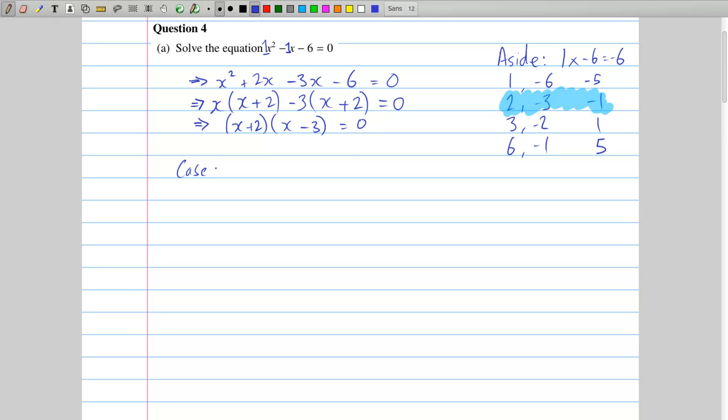So case 1, the first bracket is 0. So x plus 2 equals 0, in which case x has to be a minus 2. That's the only way that happens. And case 2, then, is where the second bracket equals 0. So x minus 3 equals 0, in which case x has to be a 3.